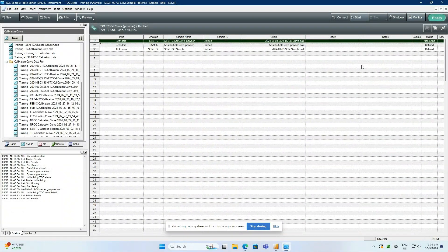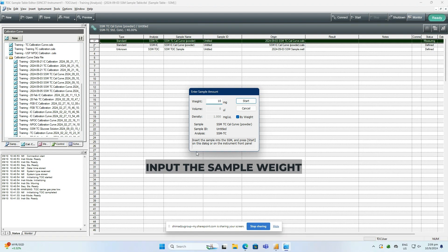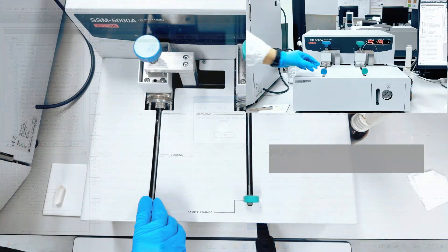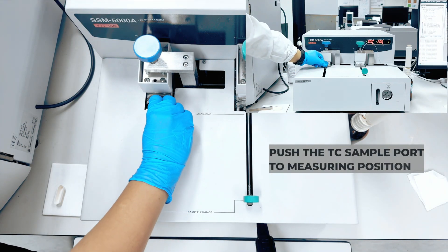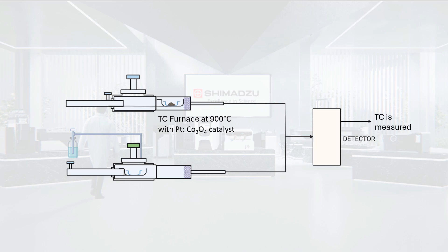In the LabSolution software, click the Start button, input the measured sample weight, and click Start again. When the instruction window appears, push the TC sample port to the measuring position. When the sample boat is pushed into the furnace compartment, the sample is combusted at 900°C to release carbon dioxide and water. The amount of carbon dioxide is detected and measured, and the TC value can be obtained.